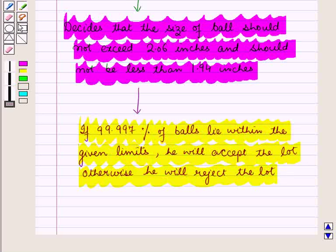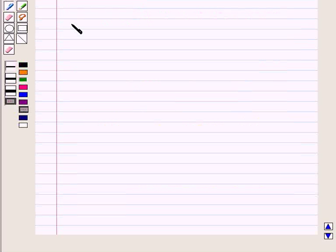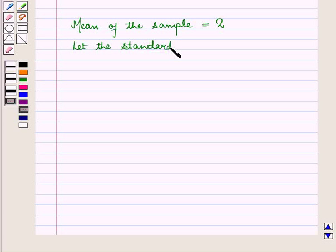He constructs a histogram for the recorded readings which gives a normal distribution. Mean of the sample is equal to 2 and let the standard deviation be 0.01.